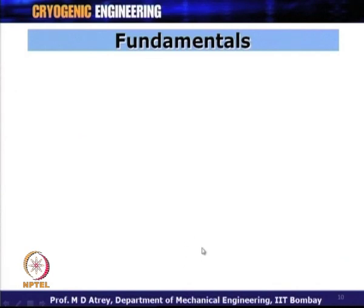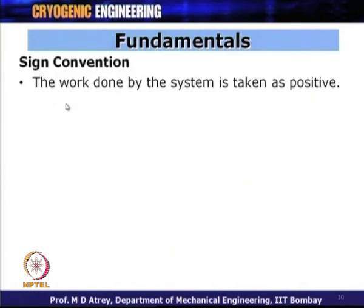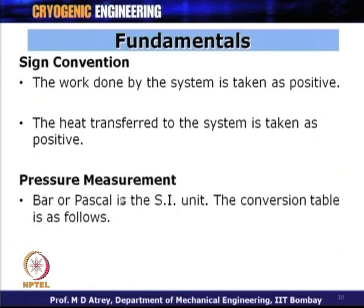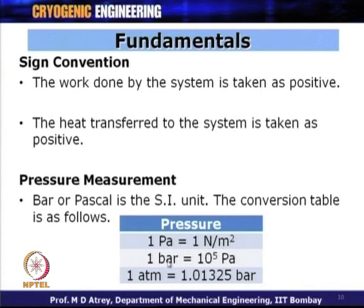With these parameters, let us see some fundamentals to analyze this liquefaction cycle. The sign convention: work done by the system is positive, work done on the system is negative. Heat transfer to the system is positive, heat leaving the system is negative. Pressures are in bar or Pascal: 1 Pascal equals 1 Newton per meter squared, 1 bar equals 10^5 Pascals, 1 atmosphere equals 1.013 bar. In actual cases we assume 1 atmosphere equals 1 bar.